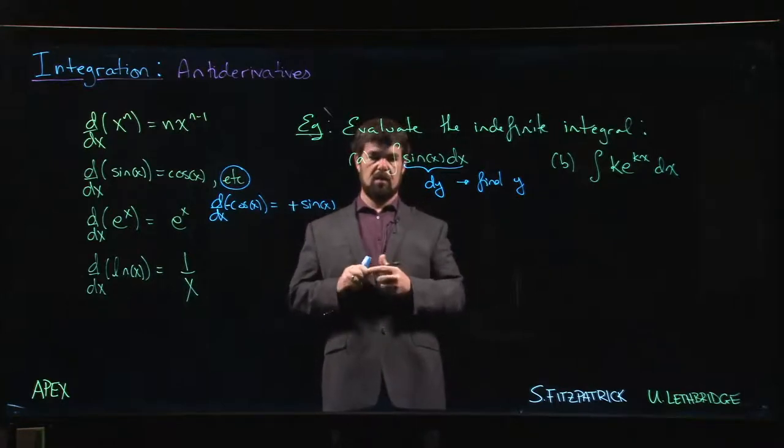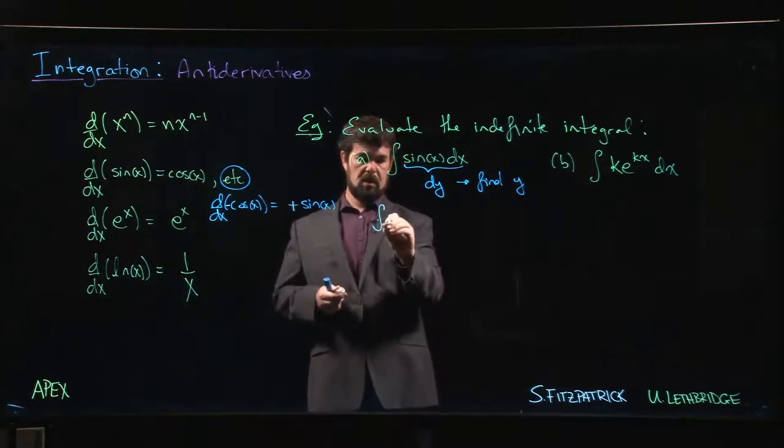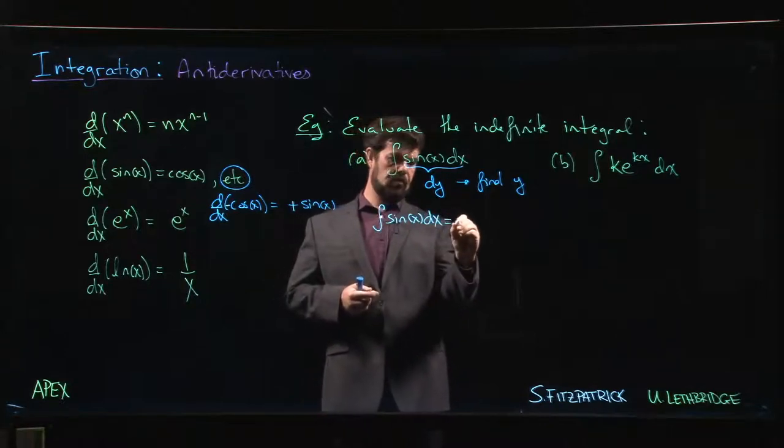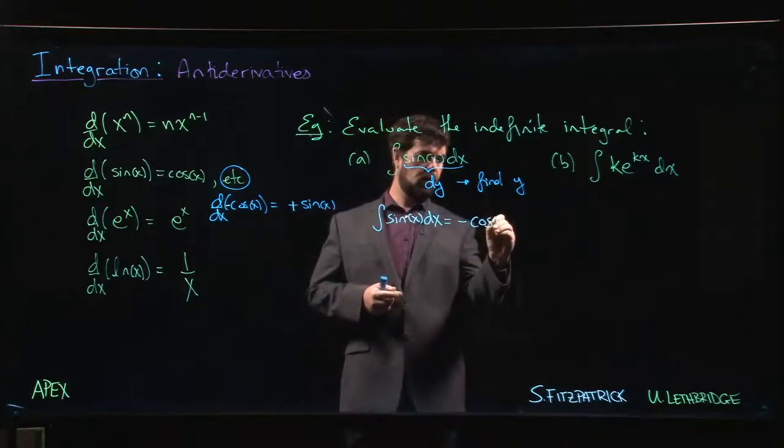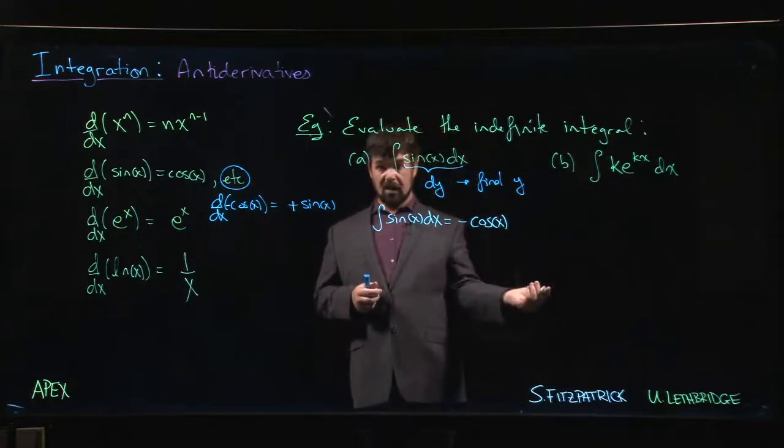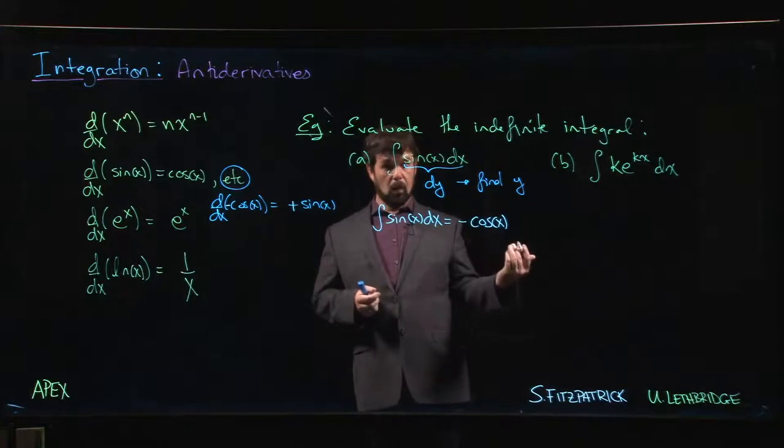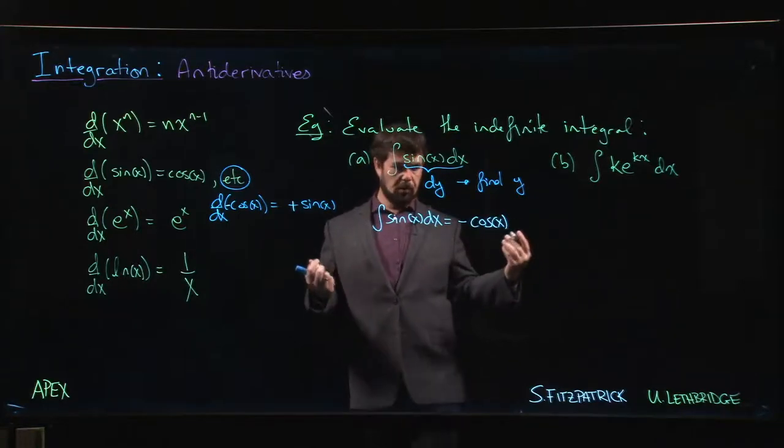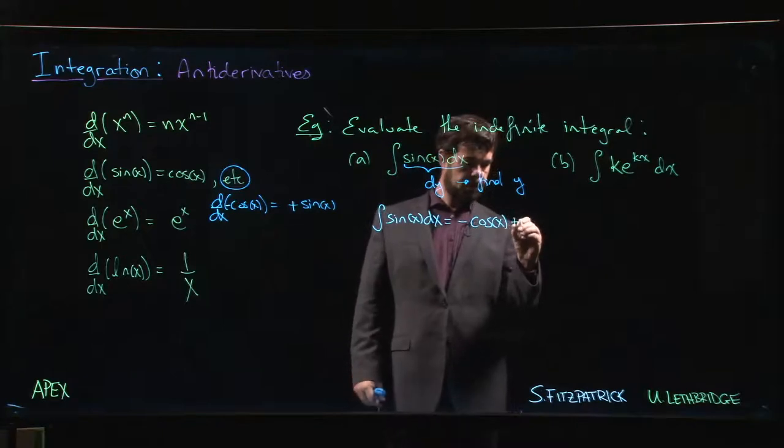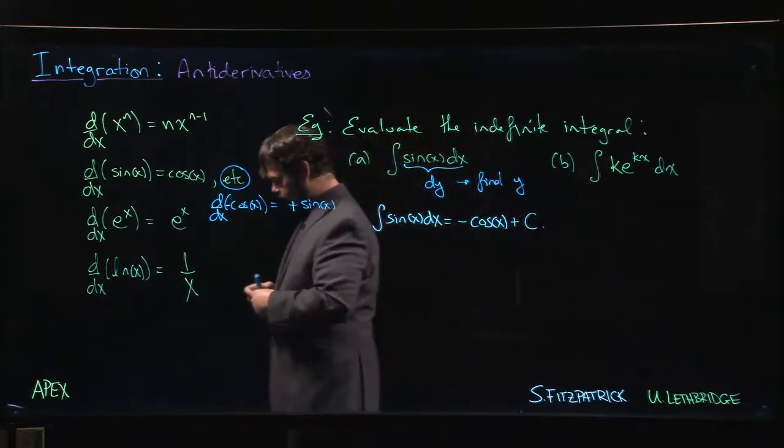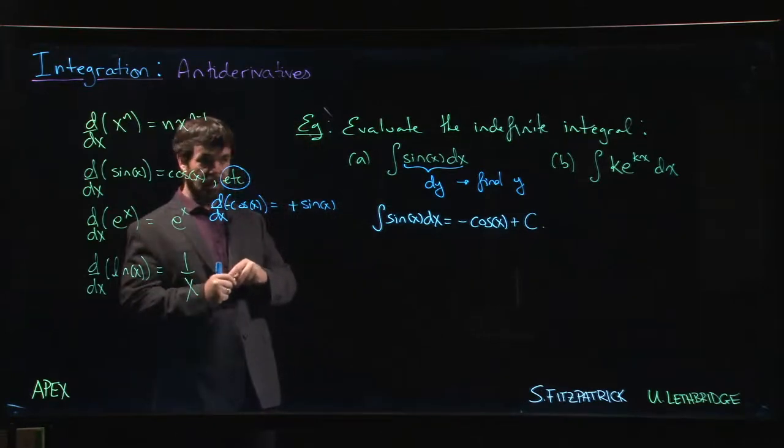Now we know that the antiderivative of sin(x)dx is just minus cos(x). But remember, in this indefinite integral, it's not just asking you for one antiderivative, it's asking you for the most general possible answer, which means you put this plus C in there. This constant is sometimes referred to as the constant of integration.